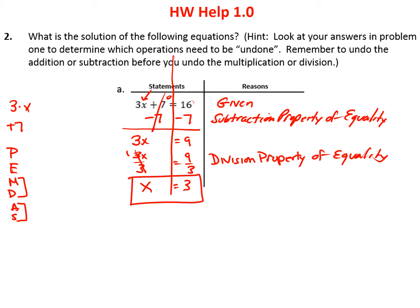The great thing about equations is you can always check them. You don't have to wait for your teacher to grade your paper — you can check it yourself. We just put the answer back into the equation for x. The equation is 3 times x, and x is 3, so 3 times 3 plus 7: 3 times 3 is 9, and 9 plus 7 is 16, which is the answer. So we've done the problem correctly.